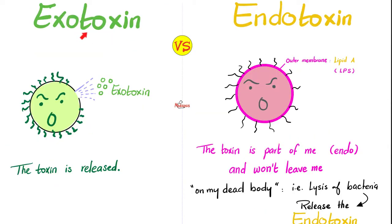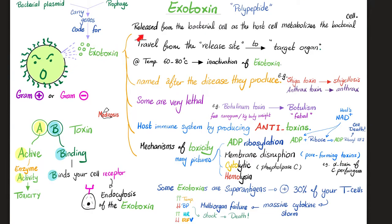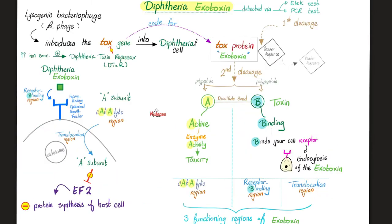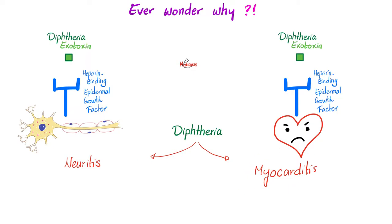Corynebacterium diphtheriae has the classic diphtherial toxin, which is an exotoxin — i.e., it is released from the bacterial cell. It's the classic AB toxin: A is the active subunit for enzyme or catalytic activity, and B is for binding with your cell receptor. The reason why diphtheria causes myocarditis and peripheral neuropathy is because the receptor for the diphtherial toxin is present in the heart and neurons, respectively.